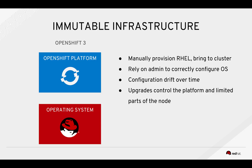The folks that set up the initial set of machines might not be the ones scaling it out a year later. Drift happens there — humans are going to be humans. When you want to upgrade the platform, OpenShift Ansible has facilities for doing that in an automated fashion, touching limited parts of the node — maybe changing the kubelet configuration and some of the other RPMs on disk. But for the most part, the operating system is left up to the admin to manage over time, and that also leads to drift between these two boxes.